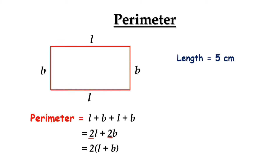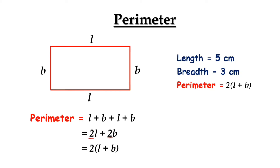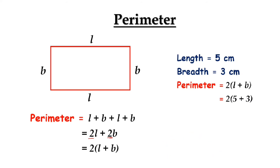Let us take length as 5 cm and breadth as 3 cm. The perimeter of the rectangle is 2 times of (L plus B). Substituting the values of L and B, we get 2 times of (5 plus 3), which equals 2 times 8, equals 16 cm. So, the perimeter of this rectangle is 16 cm.